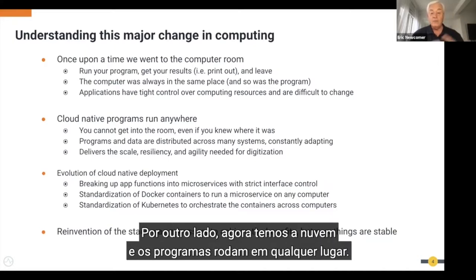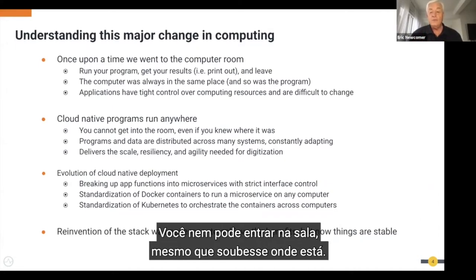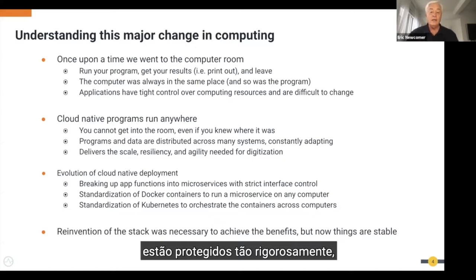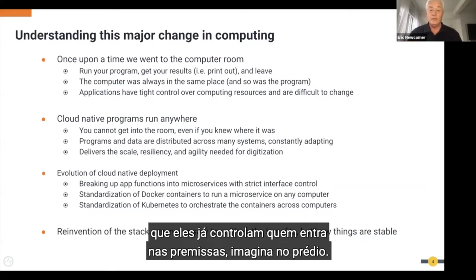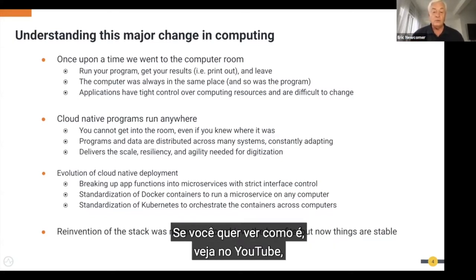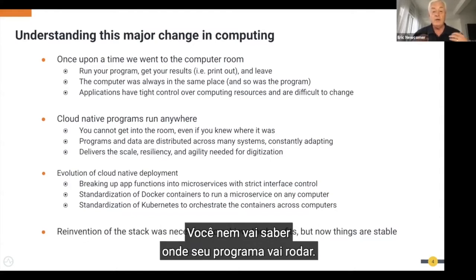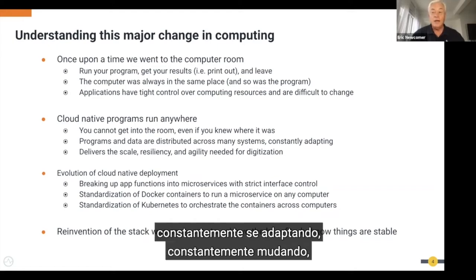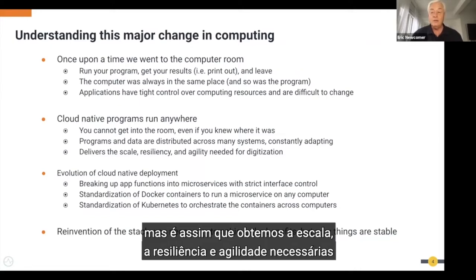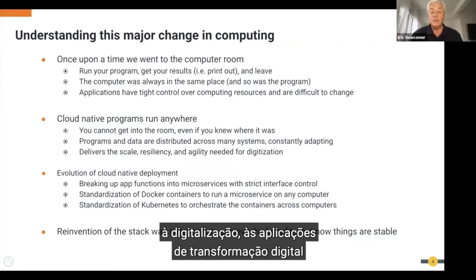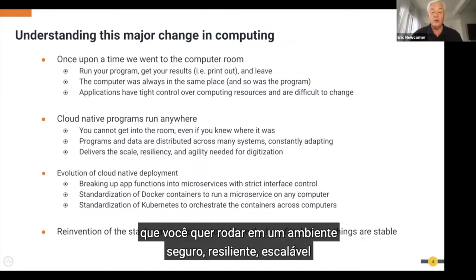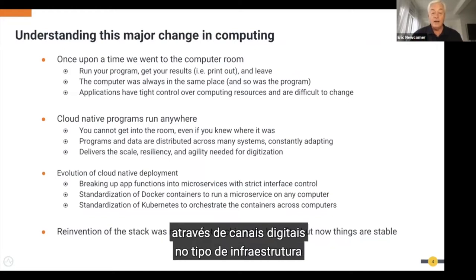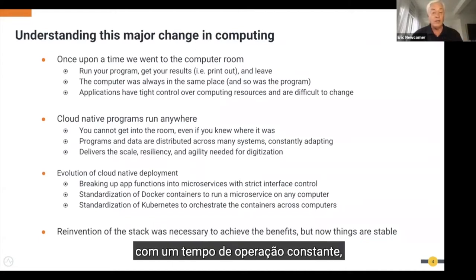Now with the cloud, programs run anywhere. You can't even get into the room — those Amazon, Microsoft, and Google data centers are locked down so strictly they control who even gets on site. Your program is distributed across many systems, constantly adapting and changing. This is how we get the scale, resiliency, and agility needed for digitization — running in a safe, secure, resilient, scalable environment at reasonable cost to deliver new customer experiences.